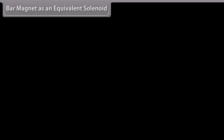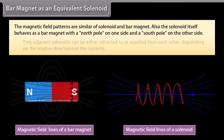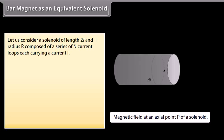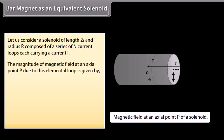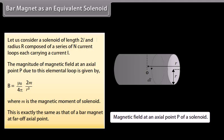The magnetic field patterns of a solenoid and bar magnet are similar. The solenoid itself behaves as a bar magnet with a north pole on one side and a south pole on the other. Two adjacent solenoids can either attract or repel each other depending on the relative directions of the currents. For a solenoid of length 2L, radius R, composed of N current loops each carrying current I, the magnitude of magnetic field at an axial point P due to an elemental loop is given by μ₀/4π × 2M/R³, where M is the magnetic moment of the solenoid. This is exactly the same as that of a bar magnet at a far-off axial point.